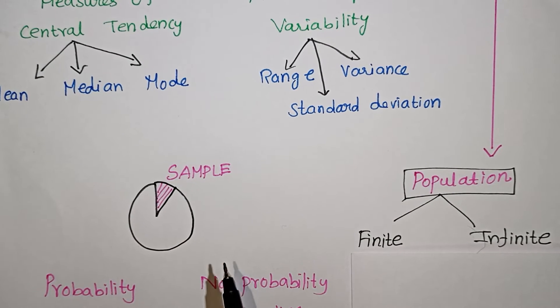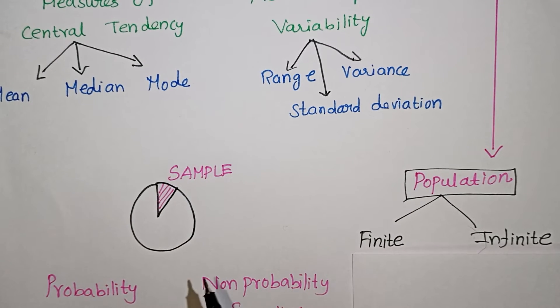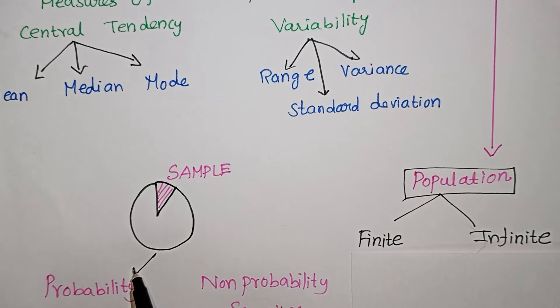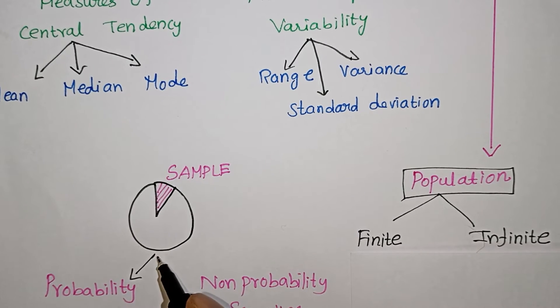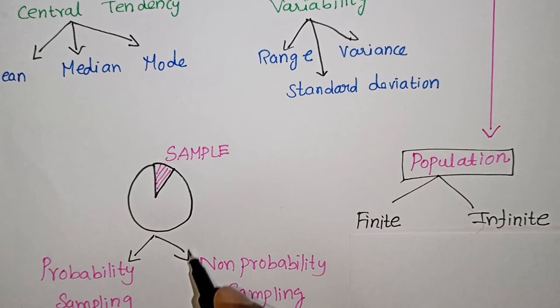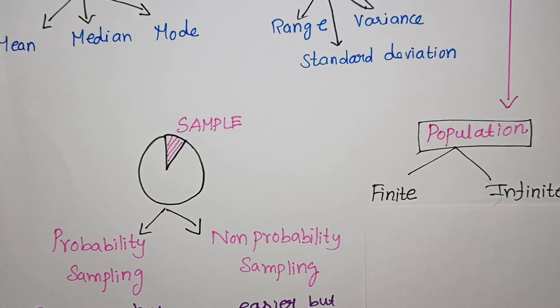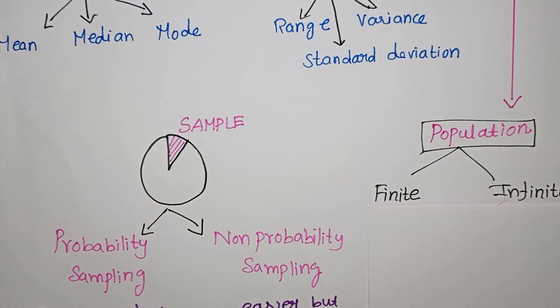There are two types of sampling: probability sampling and non-probability sampling.